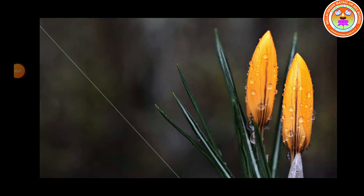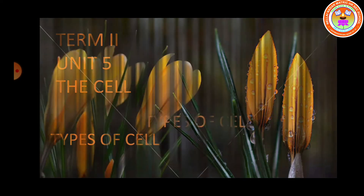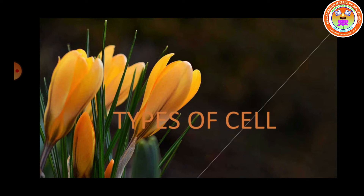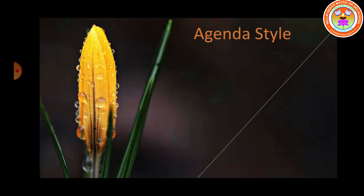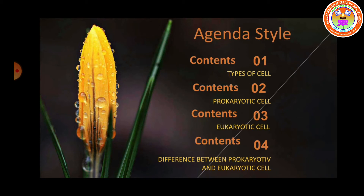Good morning children, welcome to our biology session. In today's session we are going to continue with Term 2, Unit 5, the chapter on cells. Till our previous classes we have seen the introduction of cell structure, size, shapes, etc. In today's session we are going to see about the types of cells. Under this topic we are going to see the prokaryotic cell, the eukaryotic cell, and the difference between them.